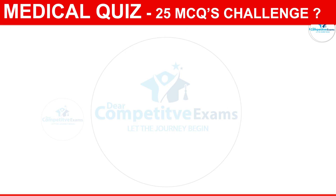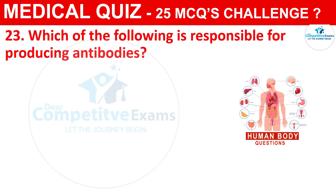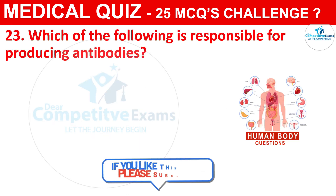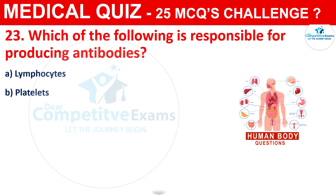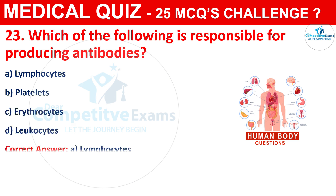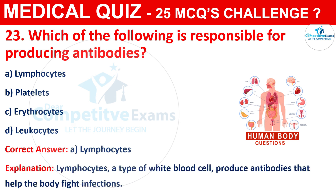Question 23: Which of the following is responsible for producing antibodies? The options are Lymphocytes, Platelets, Erythrocytes, or Leukocytes. The correct answer is A, that is Lymphocytes. Lymphocytes, a type of white blood cell, produce antibodies to fight infections.